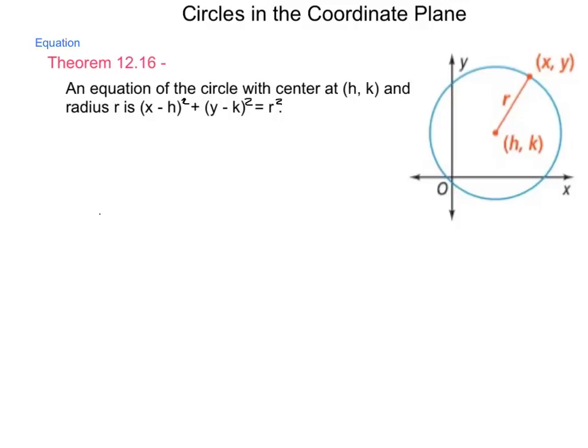So from the diagram here on the right, we have the center of the circle at (h, k) and it hits some point on the edge of the circle (x, y) and the distance to that is r. So we have (x - h)² + (y - k)² equals r². We're adding them together. It gives us r².